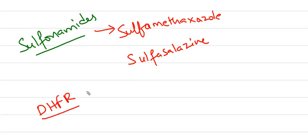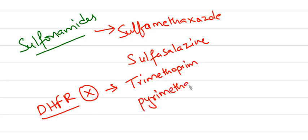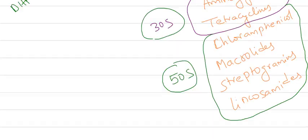Whereas Dihydrofolate reductase inhibitors are Trimethoprim and Pyrimethamine. These block the formation of folinic acid from folic acid.